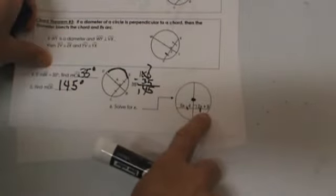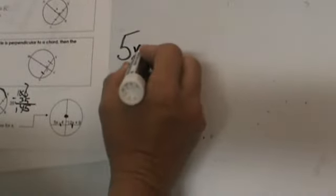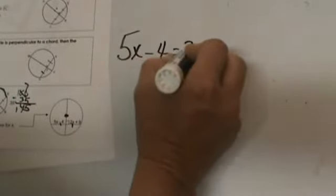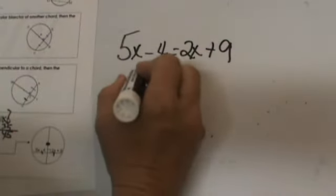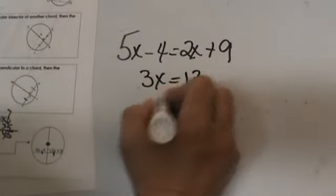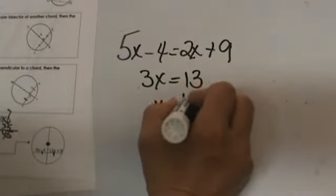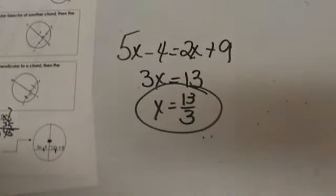Well, if we know they're congruent, that just means equal. Let's set up two simple equations. 5x-4 equals 2x plus 9 and we get 3x equals 13. So x is 13 thirds. And that's how we would solve for x. So that's this first page.